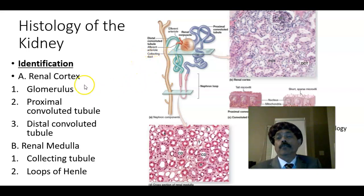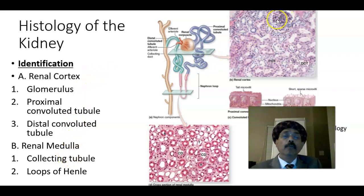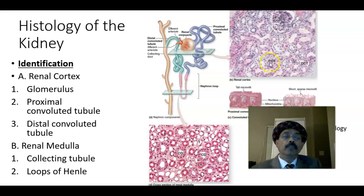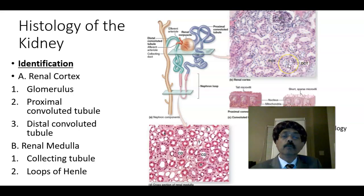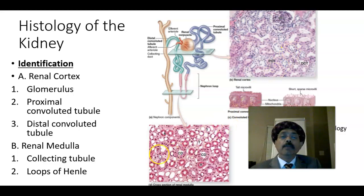The kidney has cortex and medulla. The cortex has glomerulus — these are tuft of capillaries, and these are fenestrated capillaries. We also have proximal convoluted tubules in this histological preparation, as well as distal convoluted tubules. In the medullary region, we get the collecting duct, as seen here.